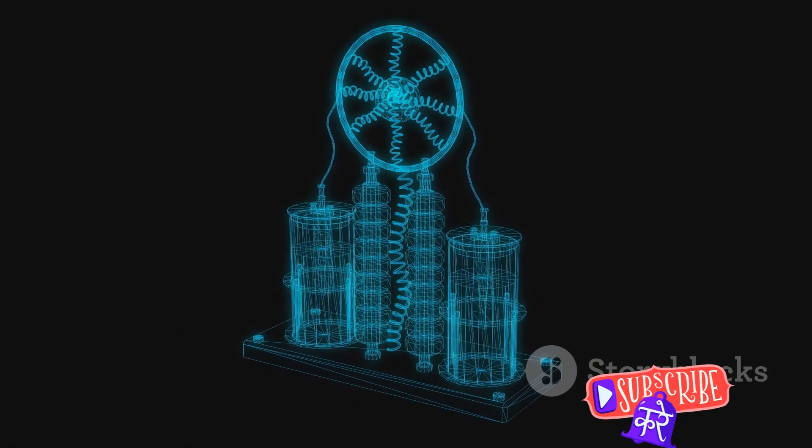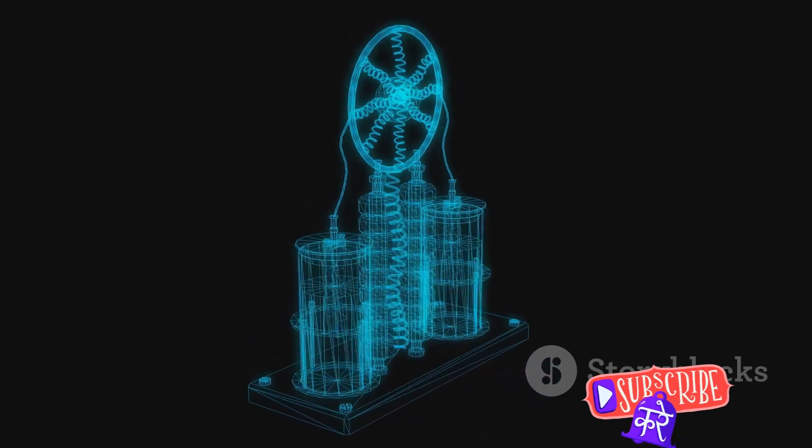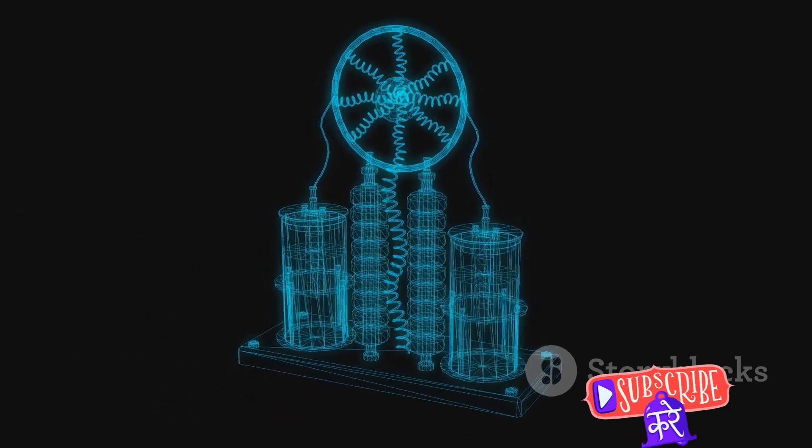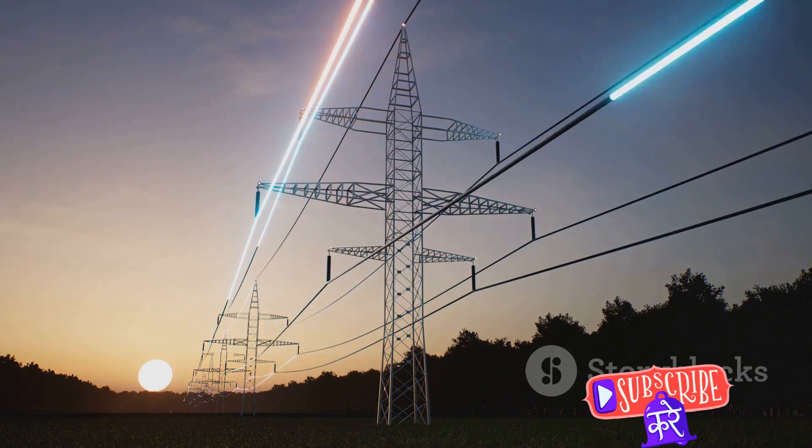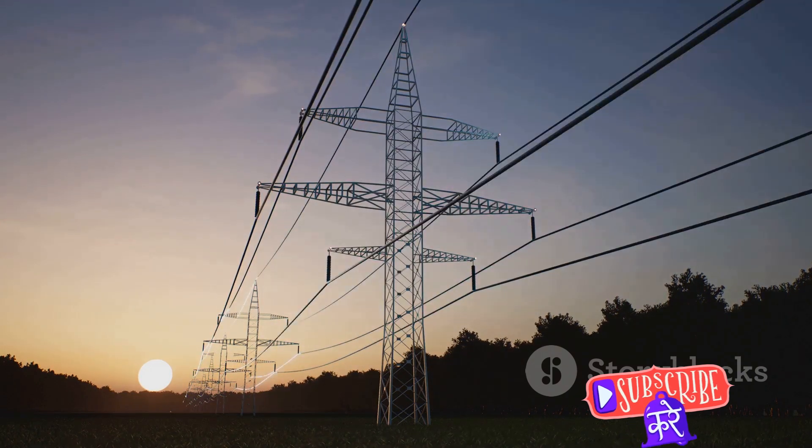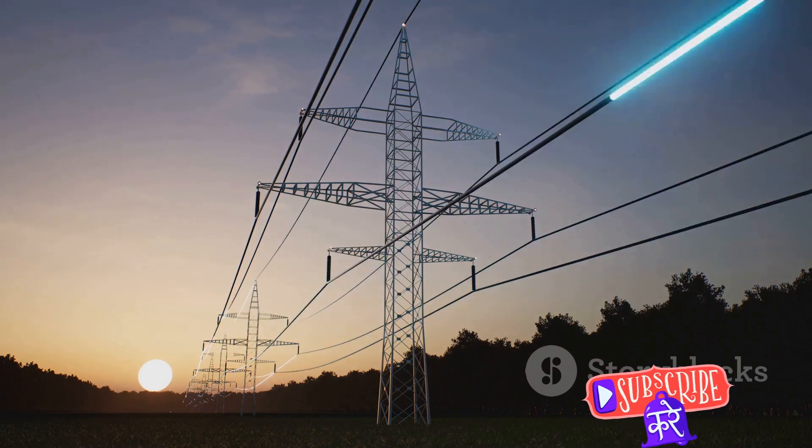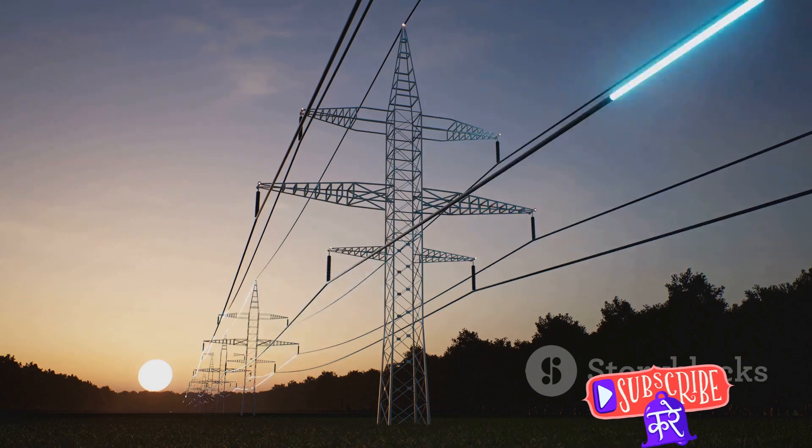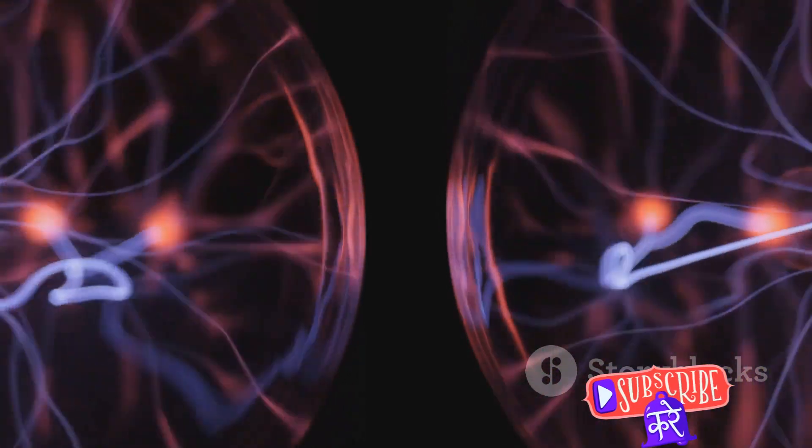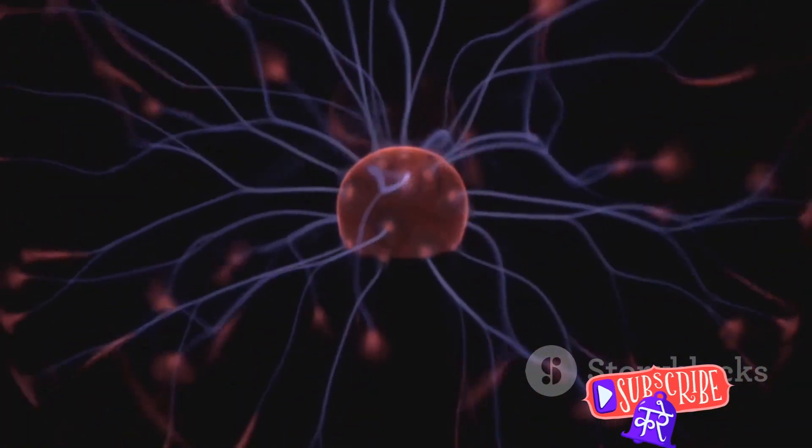This absorbed energy is what makes the secondary coil vibrate at an incredibly high frequency. And as it vibrates, it generates a significantly high voltage. This high voltage is what creates the spectacular sparks that Tesla coils are famous for. The beauty of resonance in a Tesla coil is that it allows for the amplification of voltage to a very high level without the need for any additional power source. It's a brilliant example of how we can harness the natural properties of objects to create something truly extraordinary.